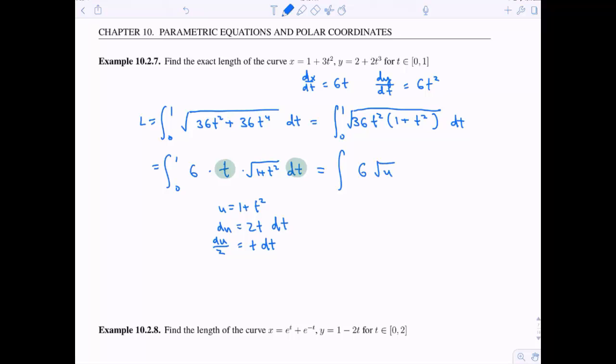So this is going to give me 6 times the square root of u, u is this thing under the square root, times du over 2. Now I can integrate this. I'm going to get a 3. That's my 6 and my 1 half. Canceling a little bit. And I'm going to get 2 thirds u to the 3 halves.